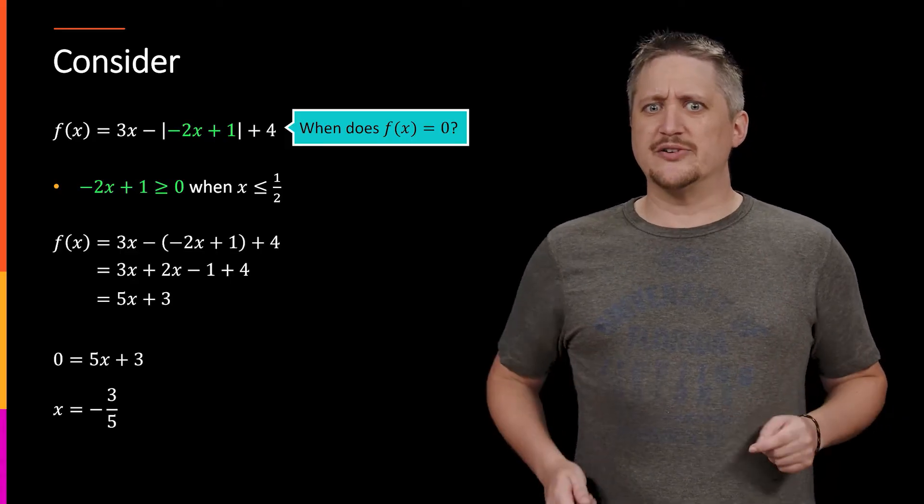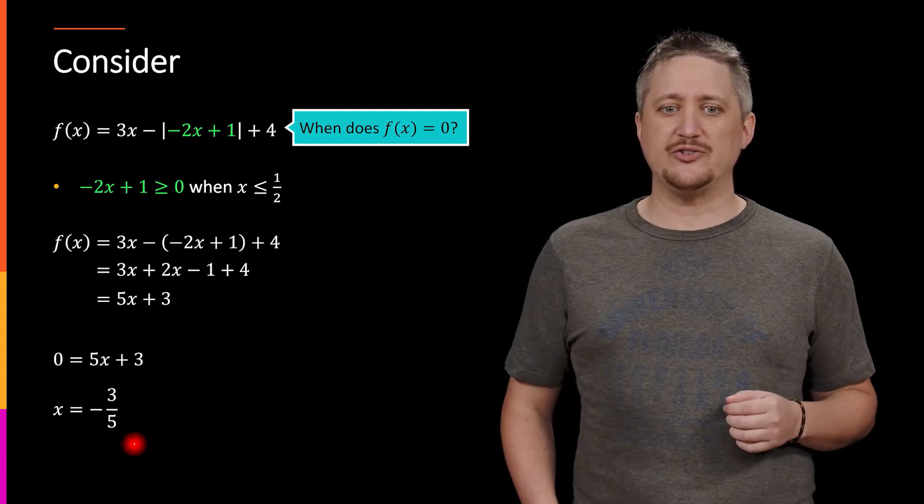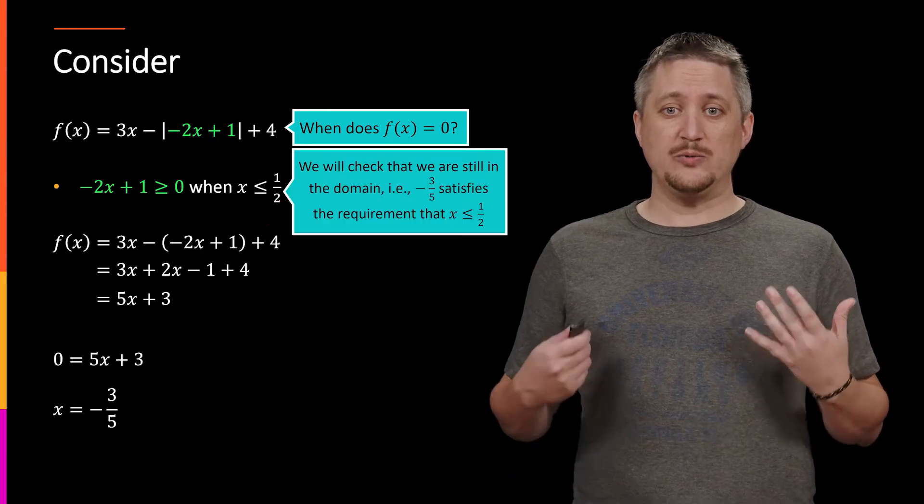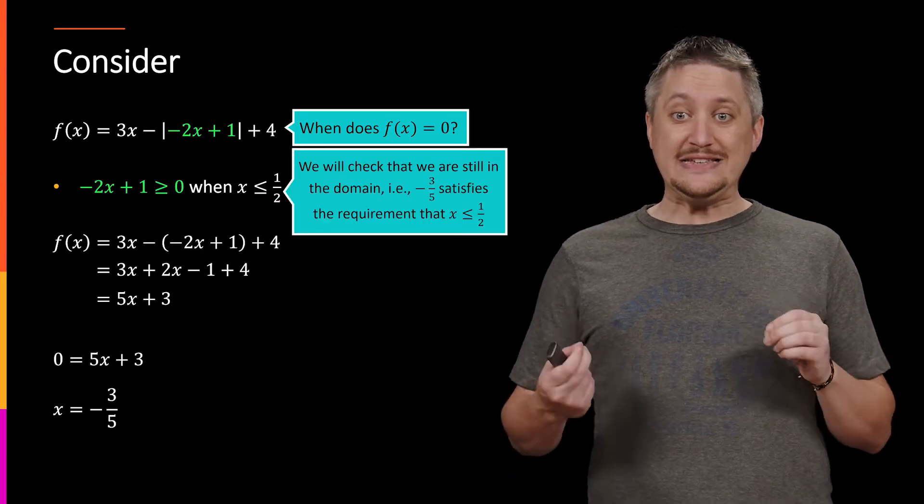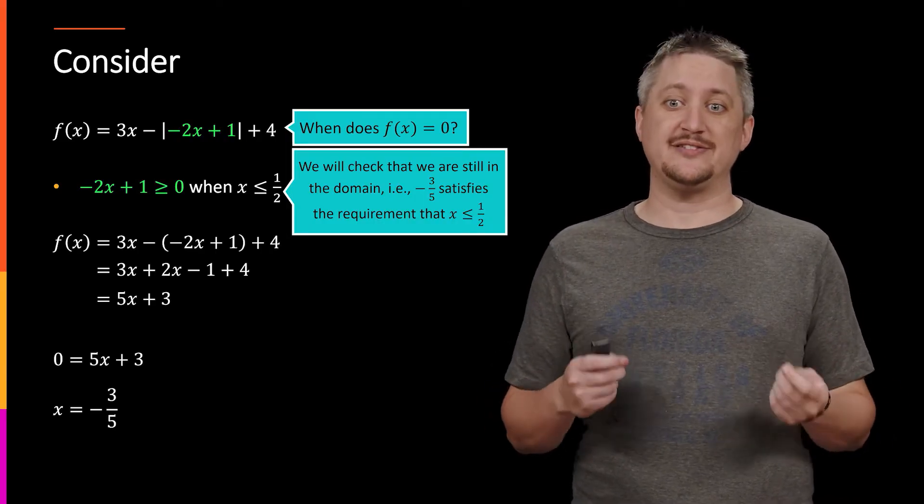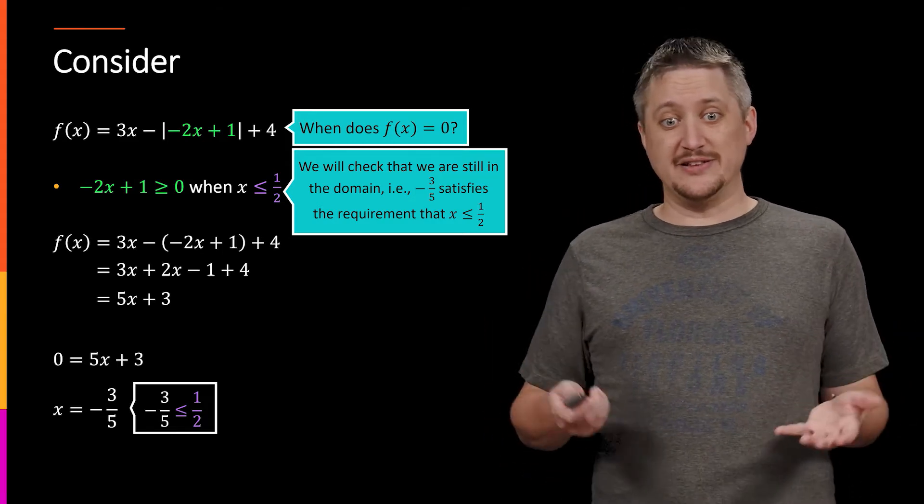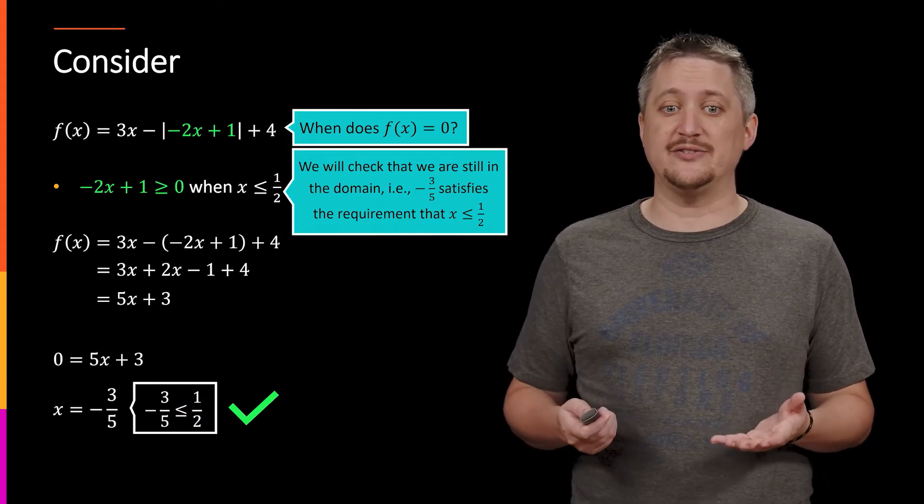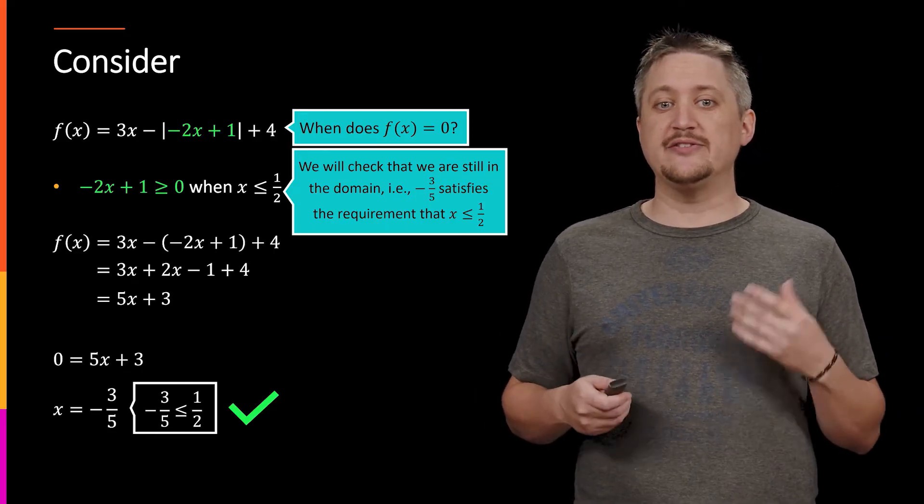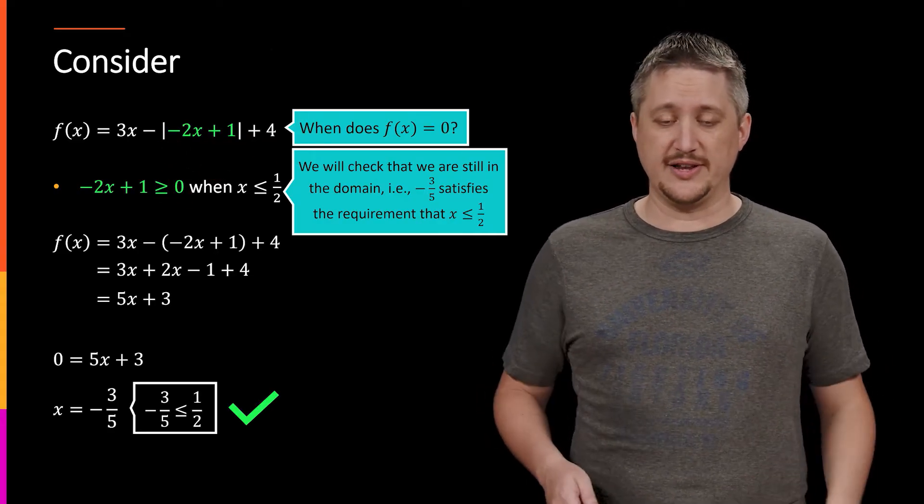But remember, this was working under assumption. In particular, this is under the assumption x is less than or equal to 1/2. So we have to actually make sure that the answer that we got actually does obey that assumption, meaning that we need to check that we're still in the right domain, i.e., that -3/5 satisfies the requirement that x is less than or equal to 1/2. But -3/5 is indeed less than or equal to 1/2. So that means this really is an answer. This is a solution to the question when is f(x) equal to 0. And if we took that -3/5 and plugged it into the very top up here, we would indeed get 0 as an answer.